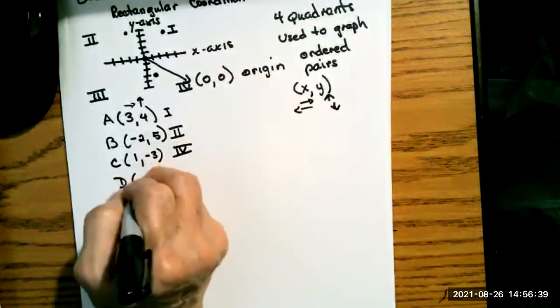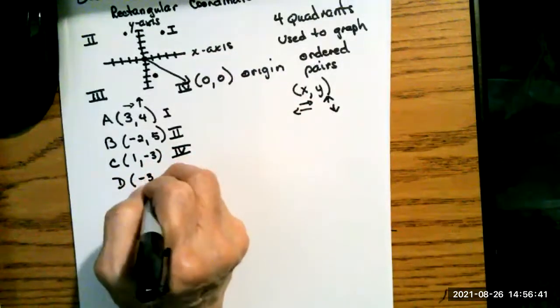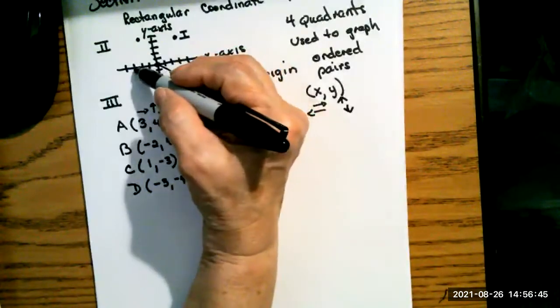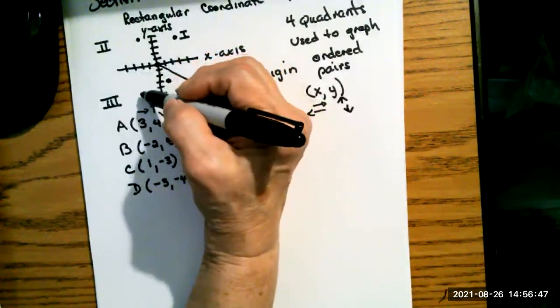Then if I have the point D, negative three, negative four, I would go over to negative three and down to negative four. And I can see that that one is in quadrant three.